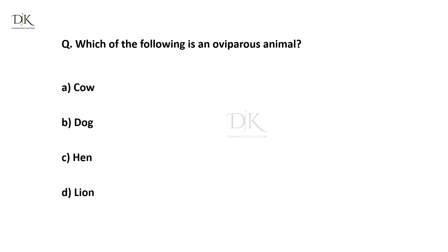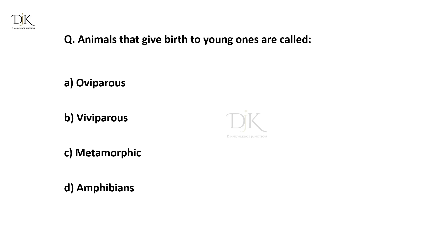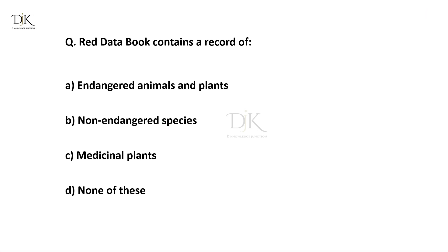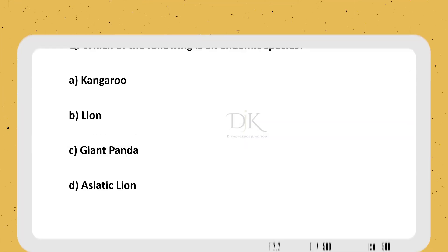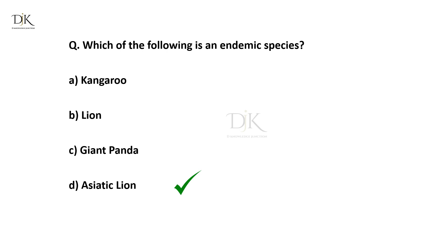Which of the following is an oviparous animal? The right answer is Hen. Animals that give birth to young ones are called? The right answer is Viviparous. The Red data book contains a record of? The right answer is endangered animals and plants. Which of the following is an endemic species? The right answer is Asiatic lion.